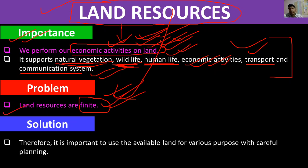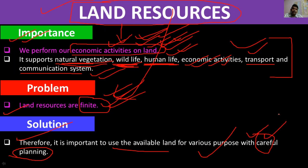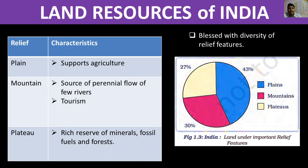Toh land jo finite hai, uske alawa woh dhere dhere ghatti bhi rahi hai, usko badana nahi sakti. Toh iska solution yeh hai ki jo land available hai humare paas, usko hum bahut careful use karein. We should use the land very carefully — usko plan karke use karna chahiye, kis purpose ke liye karein, taaki jo land hai woh kahin waste na ho. Land bhi ek resource hai toh hume land ko bhi save karna chahiye, conserve karna chahiye.